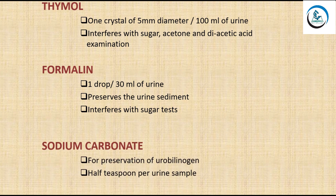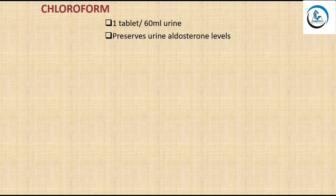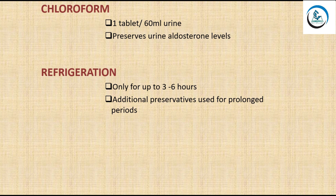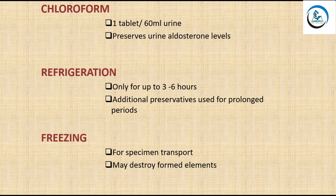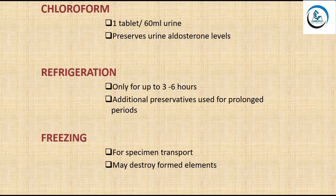Sodium carbonate is used specifically for the preservation of urobilinogen — add half a teaspoon per urine sample. Chloroform preserves aldosterone levels — add one tablet per 60 ml of urine. Refrigeration is allowed only for up to three to six hours; beyond six hours, an additional preservative must be added. Freezing is allowed only for specimen transport, but its major disadvantage is that it may destroy formed elements.